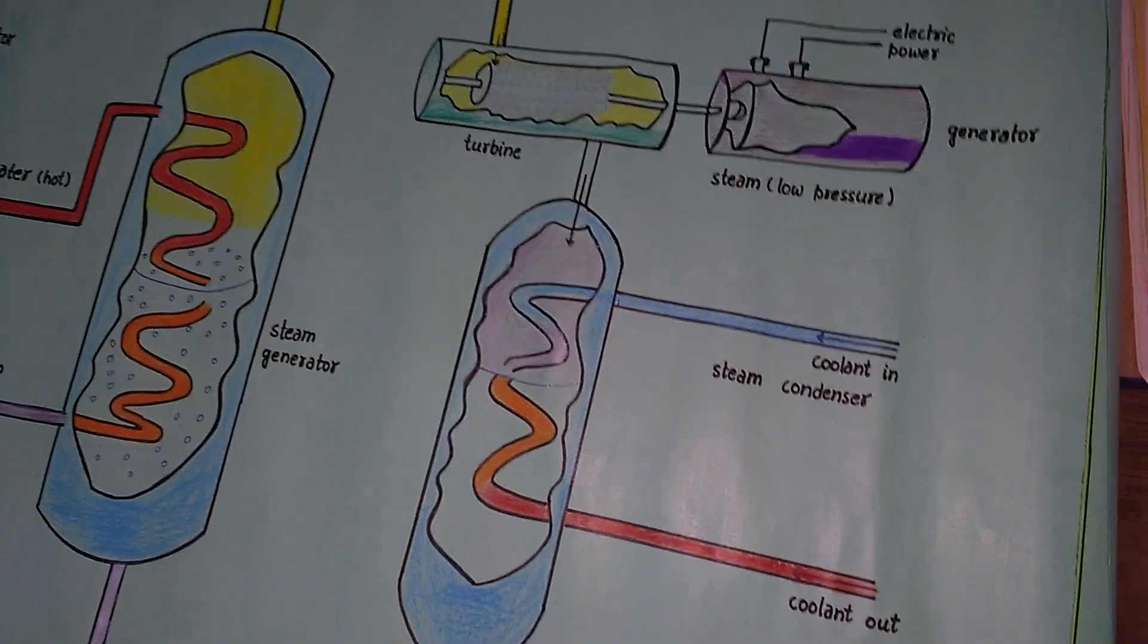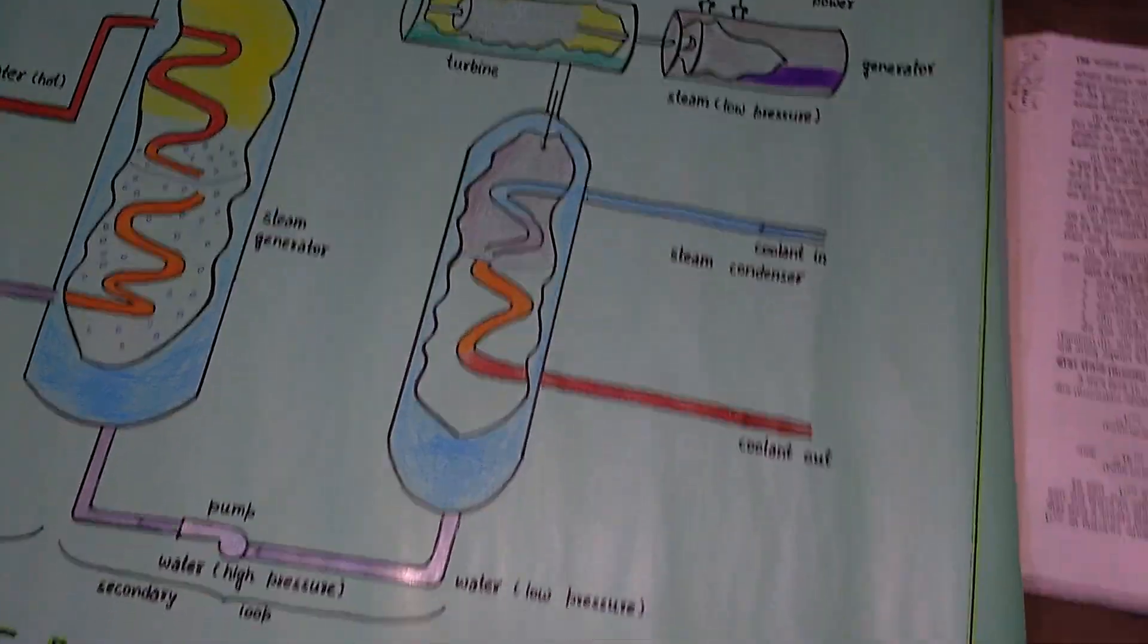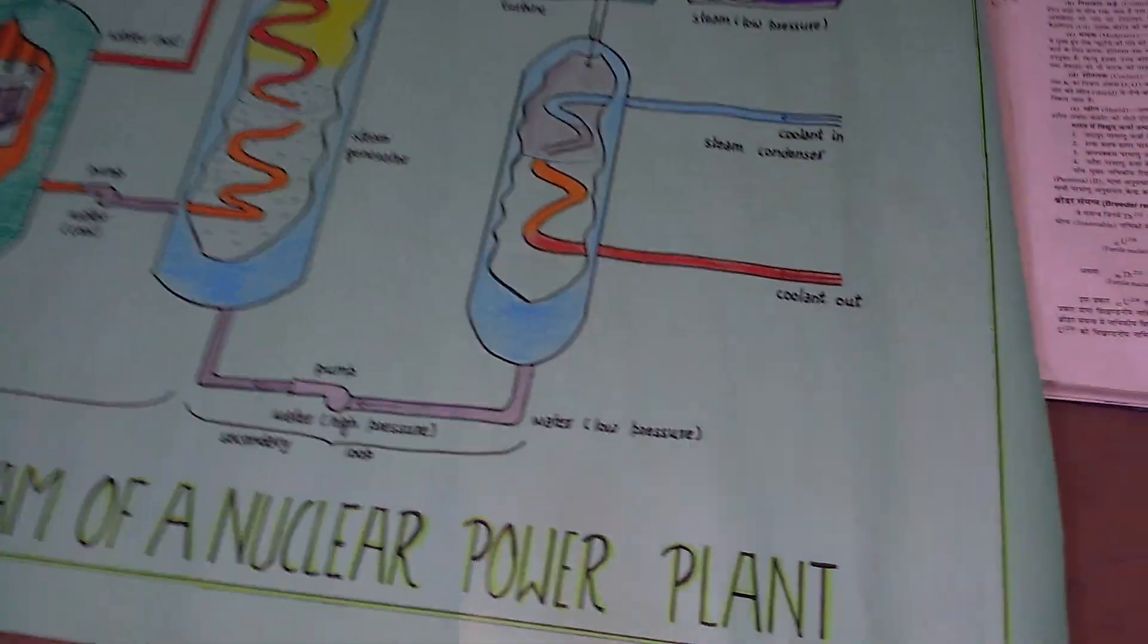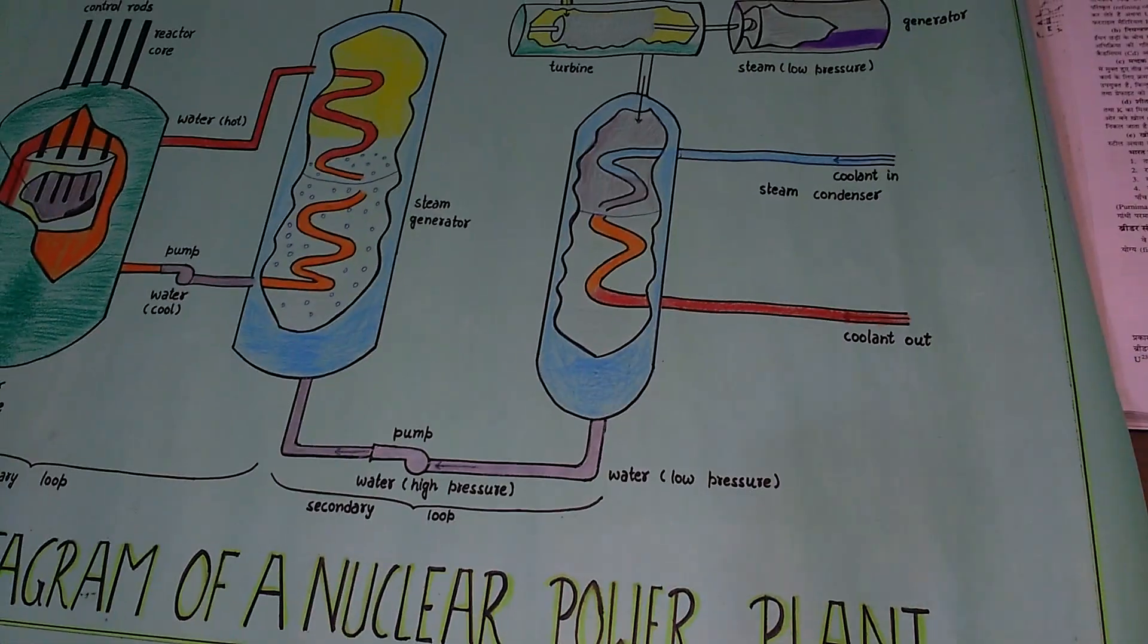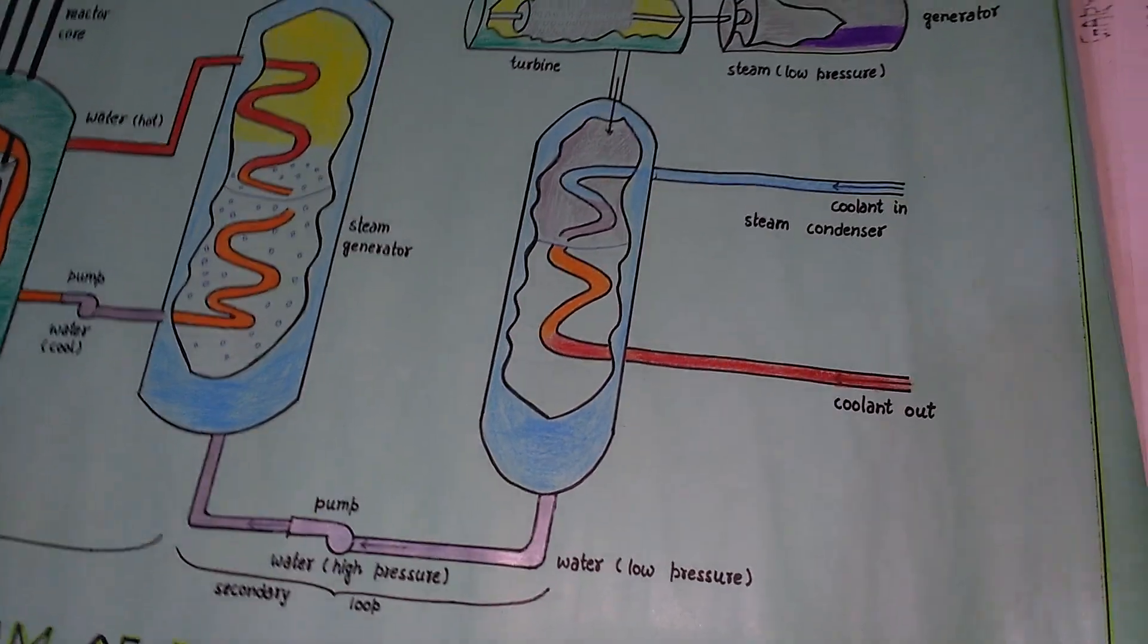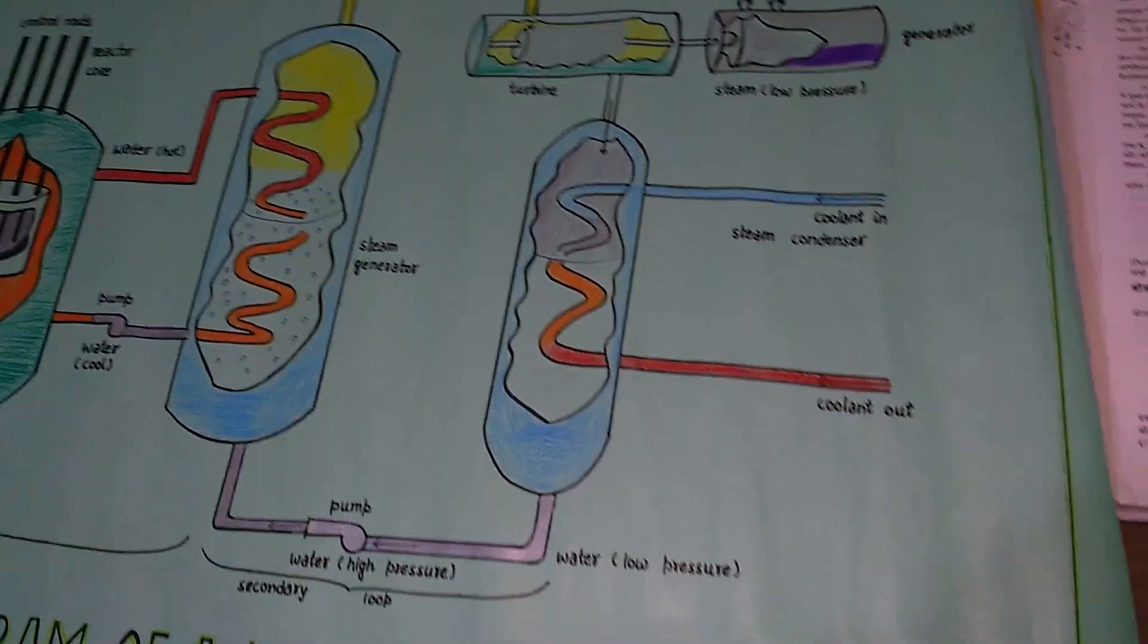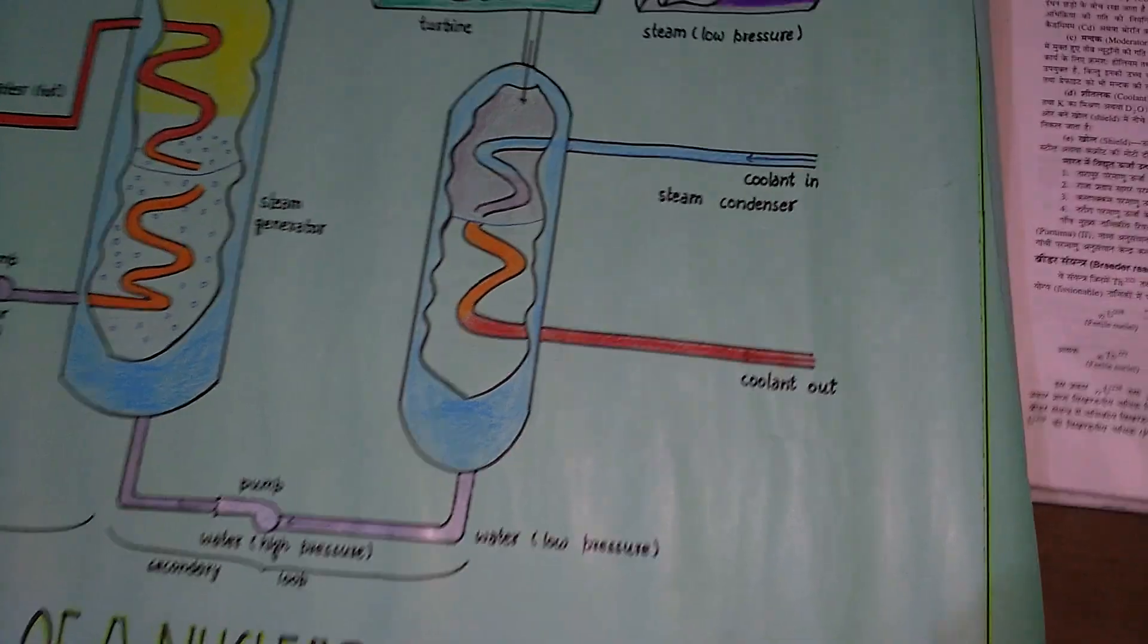Now we will know what the coolant is. The coolant is aqueous sodium and potassium mixture. In the coolant, we use D2O. The coolant absorbs the heat from the fission and carries it out.